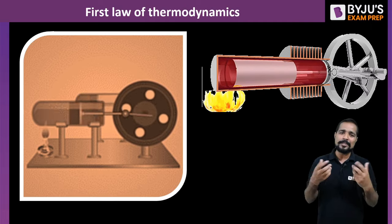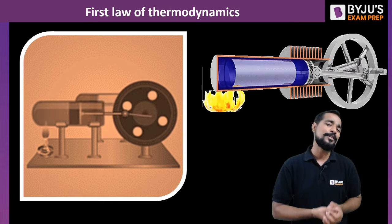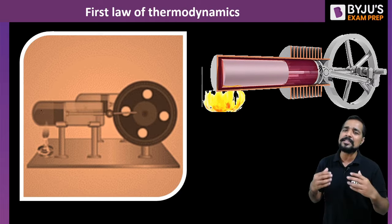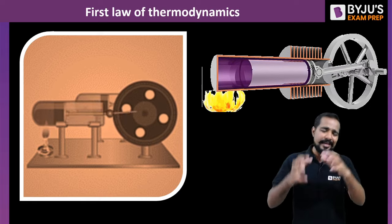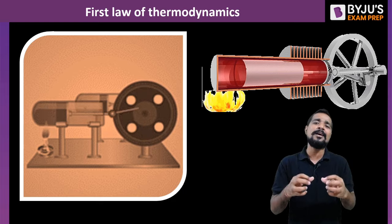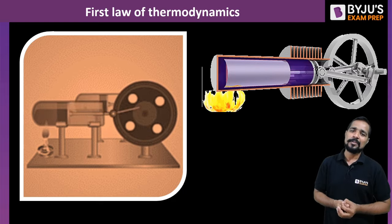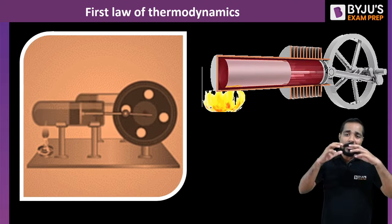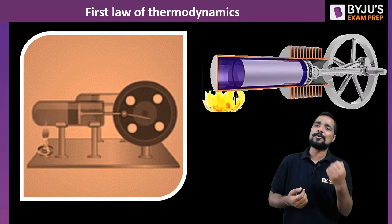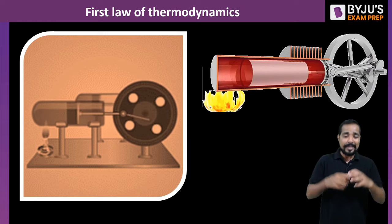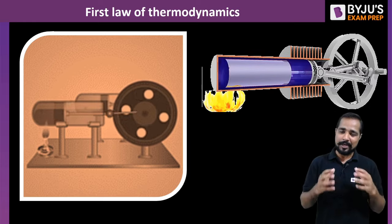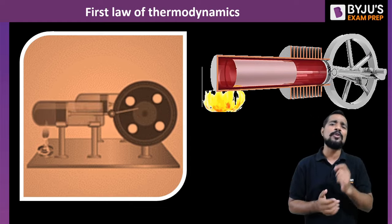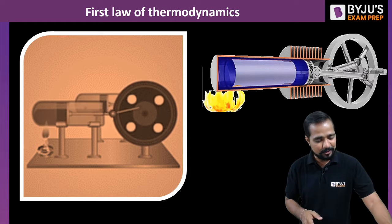Generally, we have a doubt about what the first law of thermodynamics is. Sometimes, on the name of the first law of thermodynamics, we simply say the conservation law of energy — that energy can neither be created nor destroyed, but can be transferred from one form to another. In this lecture, we try to conclude what exactly the first law of thermodynamics defines: what it means for a cycle, what it means for a process, and what the requirement was that brought the first law into the picture.